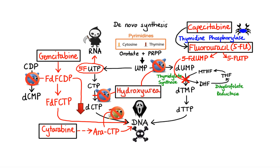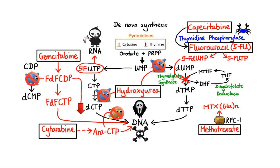Now let's move on to our last anti-metabolite drug, methotrexate. Methotrexate enters cells through the reduced folate carrier (RFC1) and is intracellularly converted to the active metabolite, methotrexate polyglutamate. Polyglutamated methotrexate then inhibits two key enzymes in the folic acid pathway: dihydrofolate reductase, which reduces dihydrofolate to tetrahydrofolate, and thymidylate synthase, which converts dUMP to dTMP. As a result, tetrahydrofolate and dTMP pools become depleted, ultimately leading to cessation of DNA synthesis.